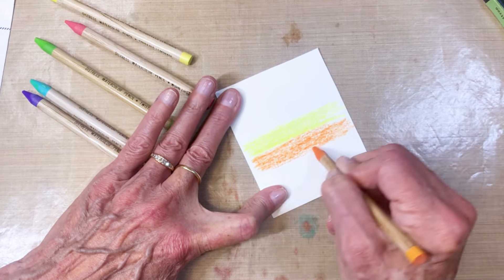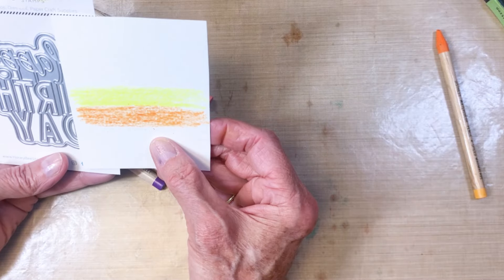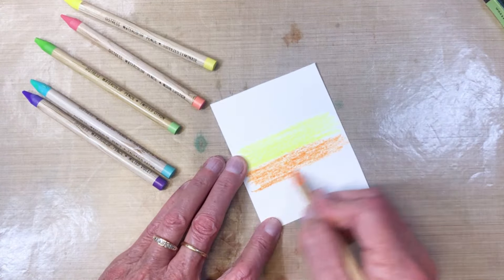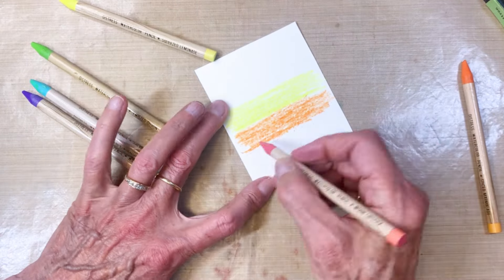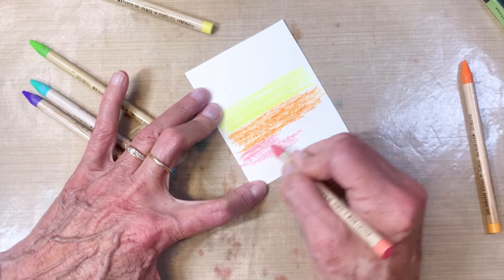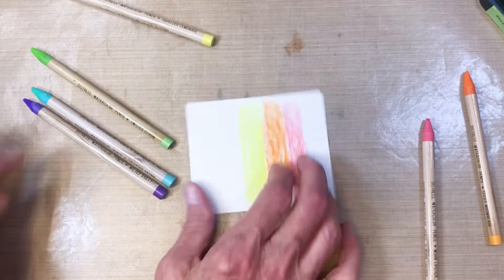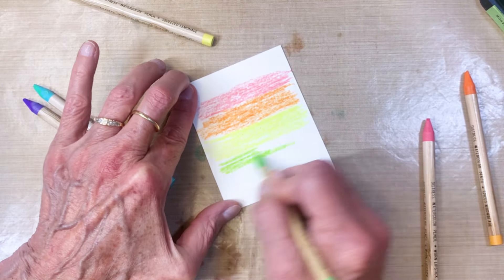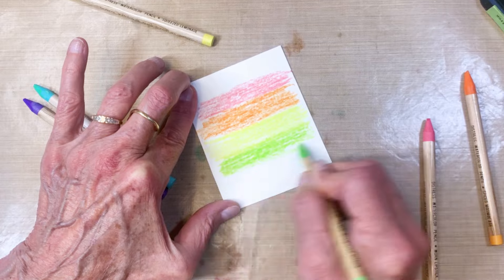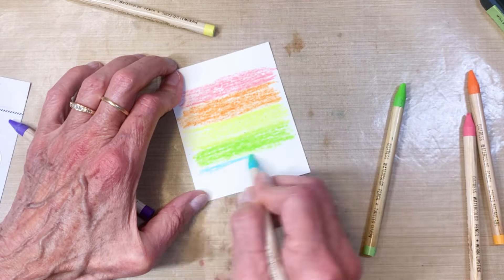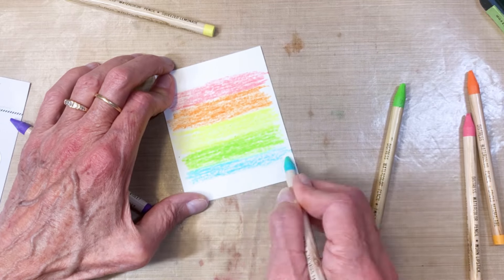I'm coloring the lines in here and I've got lemonade, savage patina, twisted citron, wilted violet, worn lipstick, and spiced marmalade. This is what's great about these pencils. There's so many different ways you can use them, but I found this to be a really easy way to get a rainbow stripe that I could then cut the words happy birthday out of.